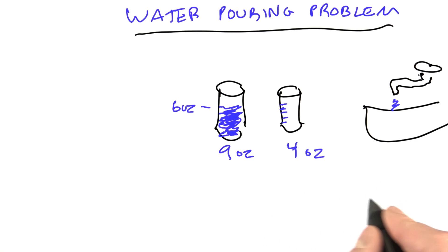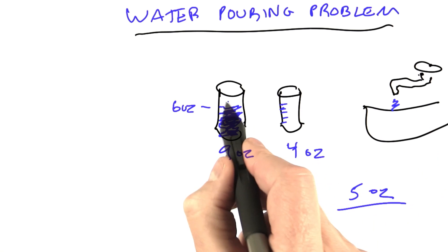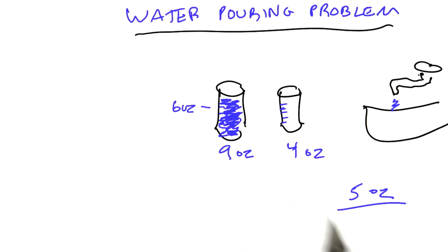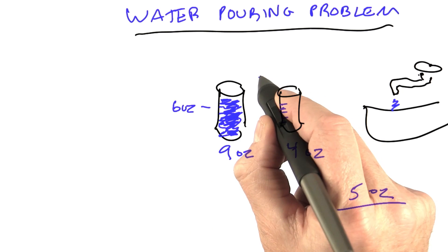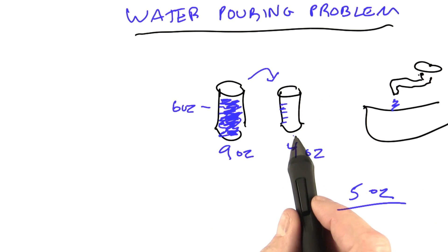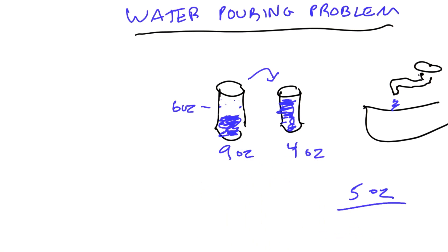For example, if the goal had been 5 ounces, then that would have been easy. We just fill the 9 ounce all the way up to the top, and then pour the 9 ounce into the 4 ounce until the 4 ounce is all the way full, and then what would be remaining here, because there's 9 altogether, would be 5 in this glass. So 5 ounces is easy.